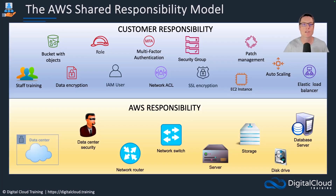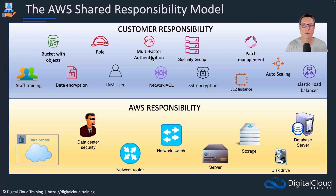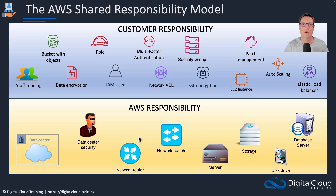Just to show you this in a slightly different graphic — here you can see the customer responsibility on the top and the AWS responsibility on the bottom. Things like managing the data in your buckets, that's up to you, as is creating things like roles, setting up multi-factor authentication, configuring security groups and network access control lists. This is all customer responsibility, along with things like patch management. And then underlying that, we've got the actual database servers, disk drives, physical network switches and routers, and the software layers, the control planes that sit on top of them. And of course, the data center security — that's no longer something you have to worry about.